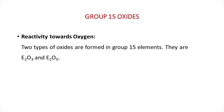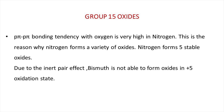All these elements react with oxygen to form two types of oxides: E2O3 and E2O5, where E is nitrogen, phosphorus, arsenic, antimony, or bismuth. The p-p bonding tendency with oxygen is very high in nitrogen, and this is the reason why nitrogen forms a variety of oxides.